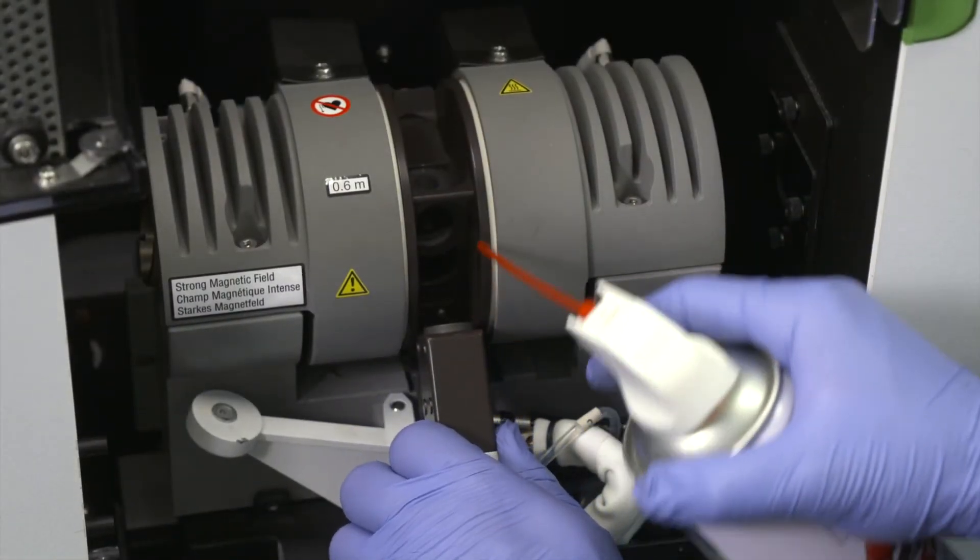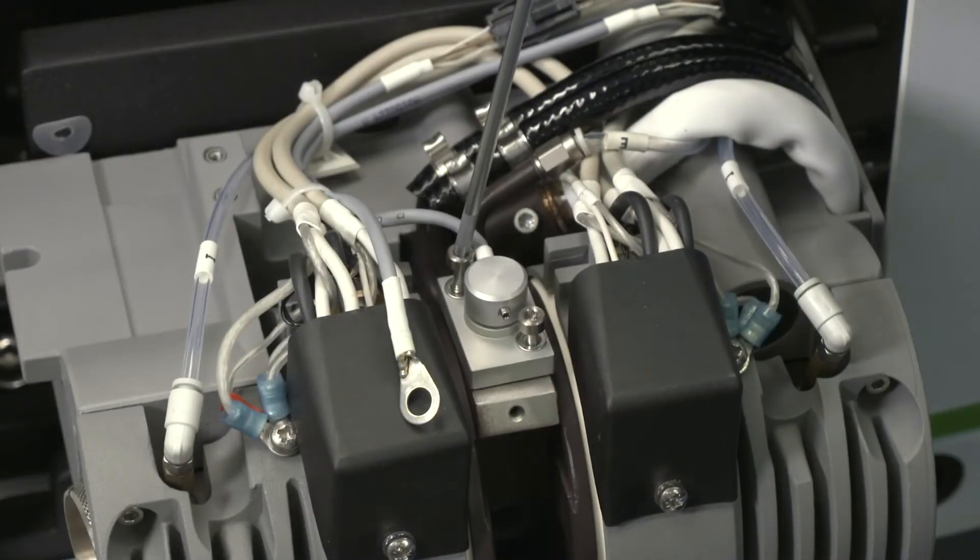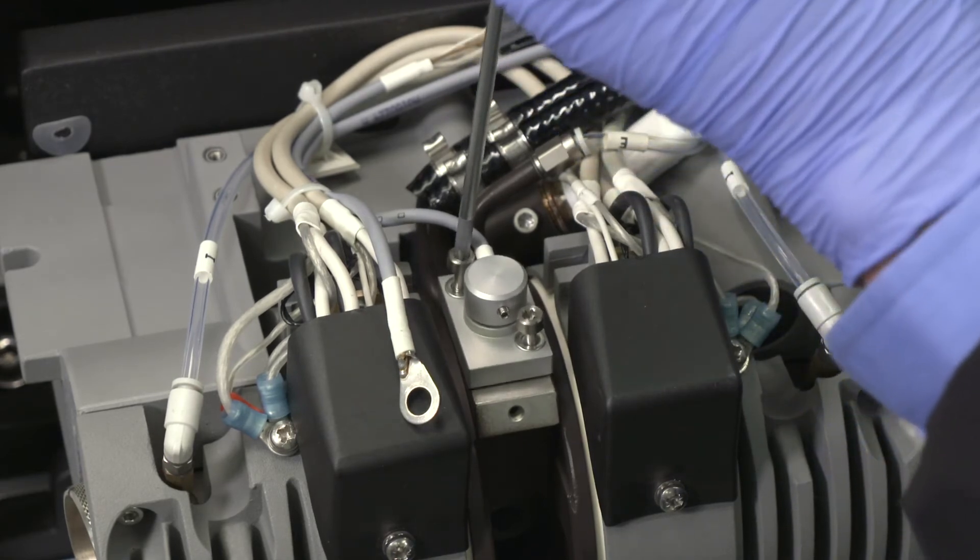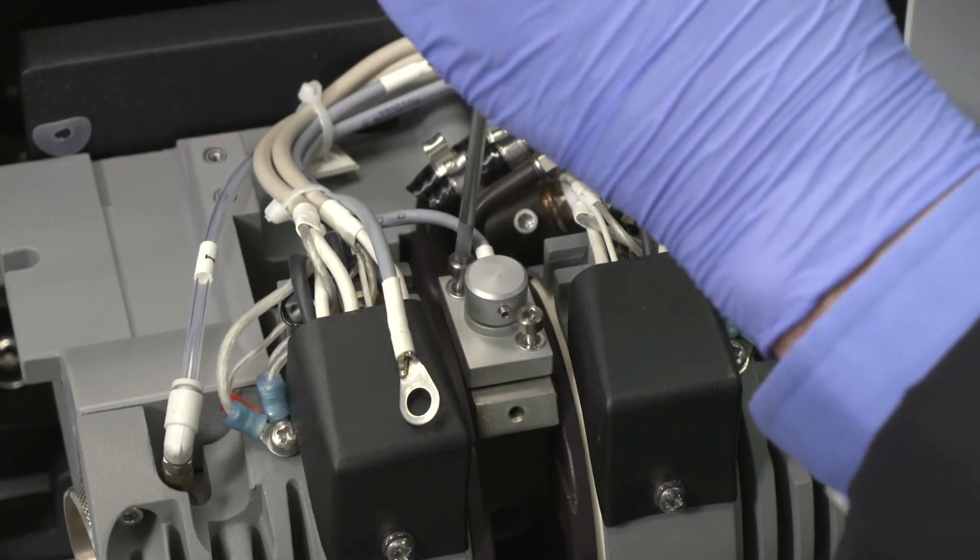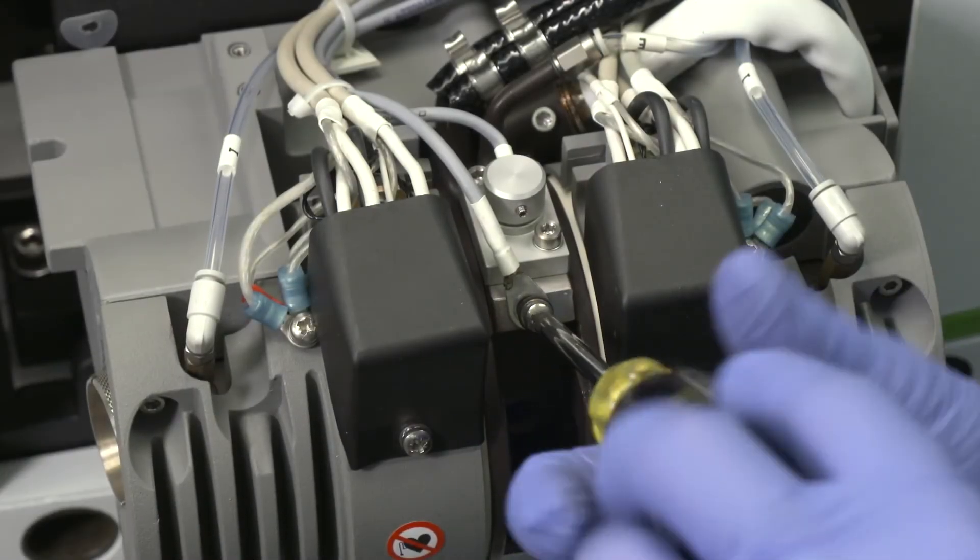Blow out any graphite particles with compressed air. Push the optical sensor into the rear contact housing. Make sure that you do not damage the O-ring. Tighten the two screws to secure the optical sensor to the rear contact housing and reattach the temperature sensor.